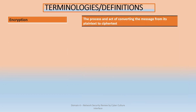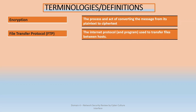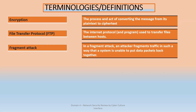Encryption is the process of converting a message from plain text to cipher text that is not easily understood. File Transfer Protocol (FTP) is a protocol used to transfer files between hosts — it is a service that runs on devices or networks and uses port 21.